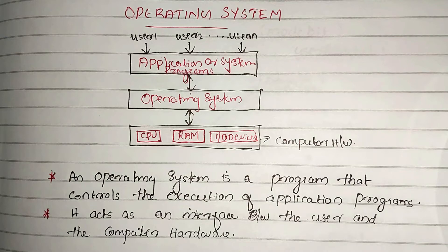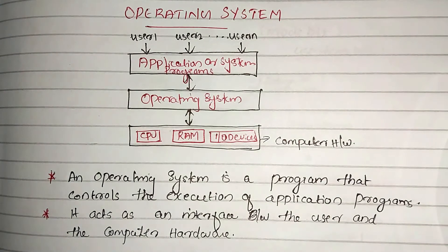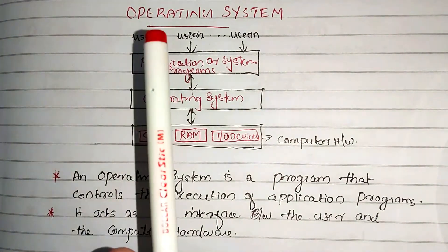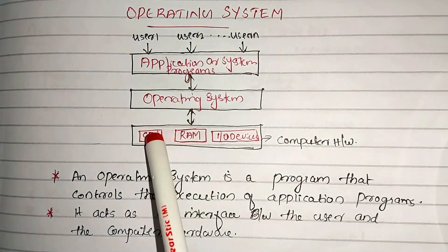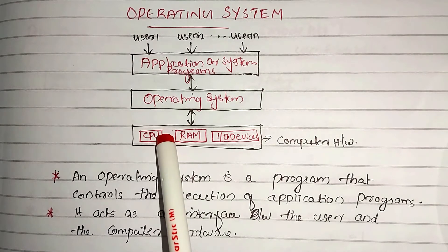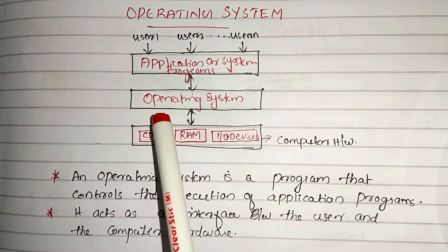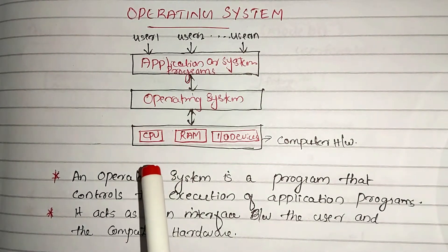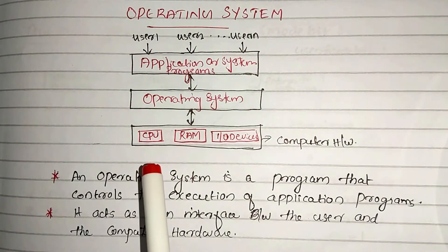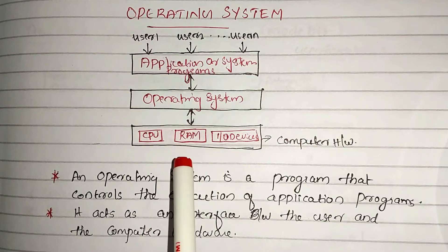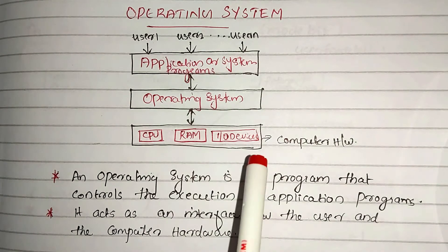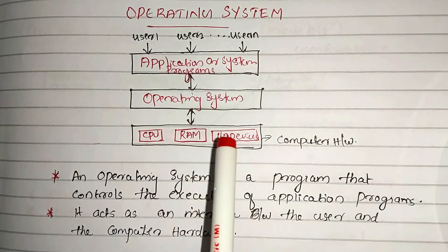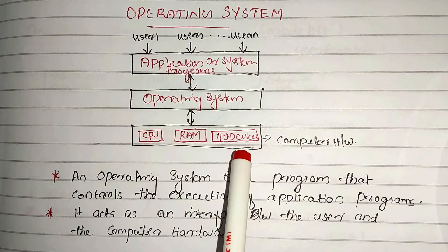Now let's check this diagram. This is the basic structure of the computer system. In the lower part, we have the CPU, Random Access Memory, and Input/Output Devices — this is the computer hardware.